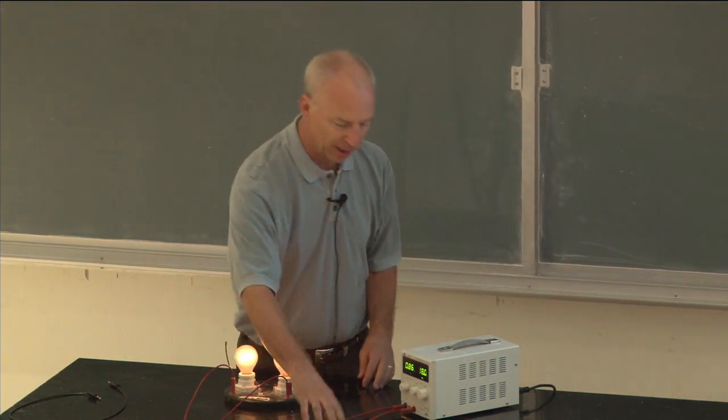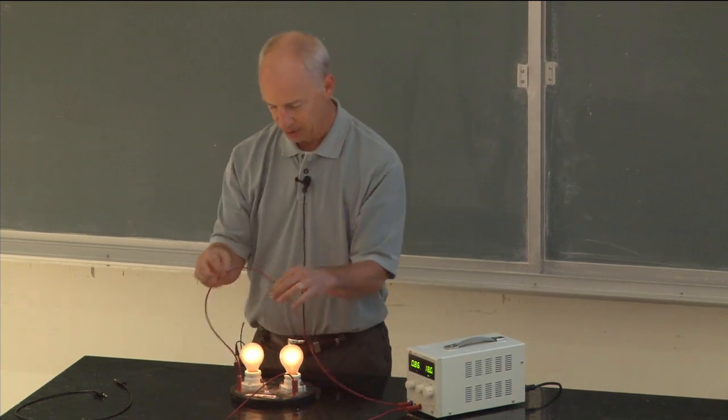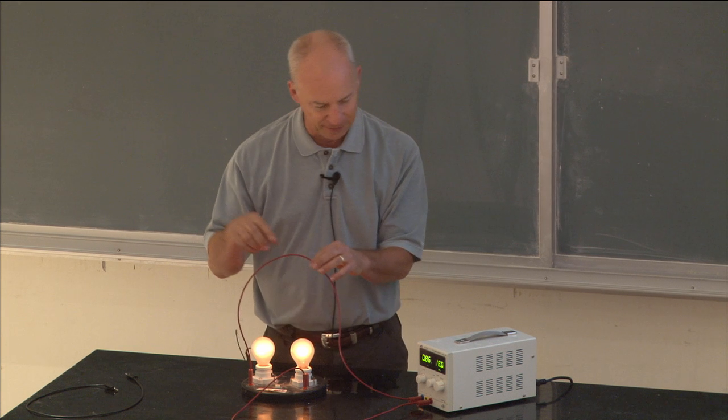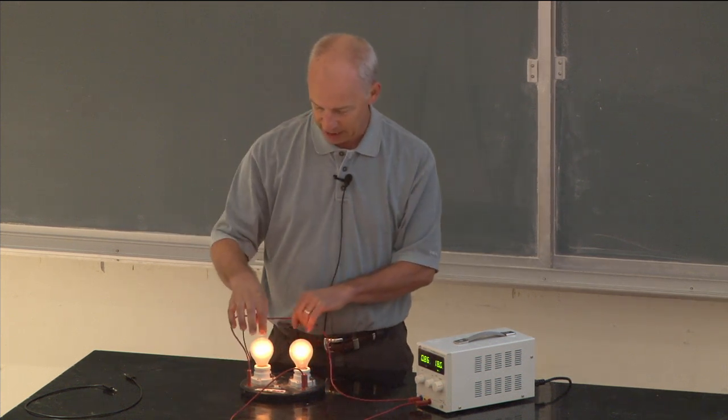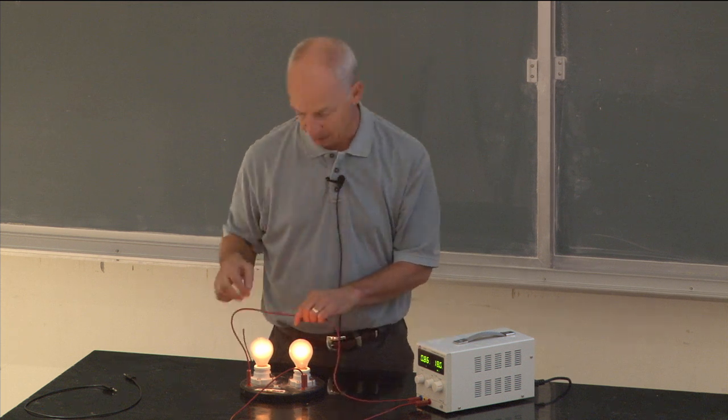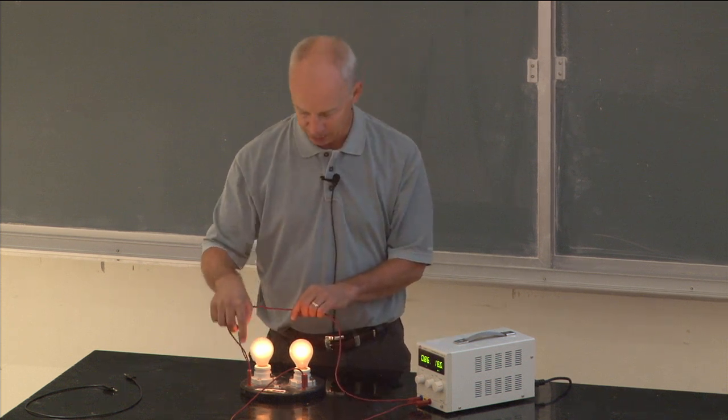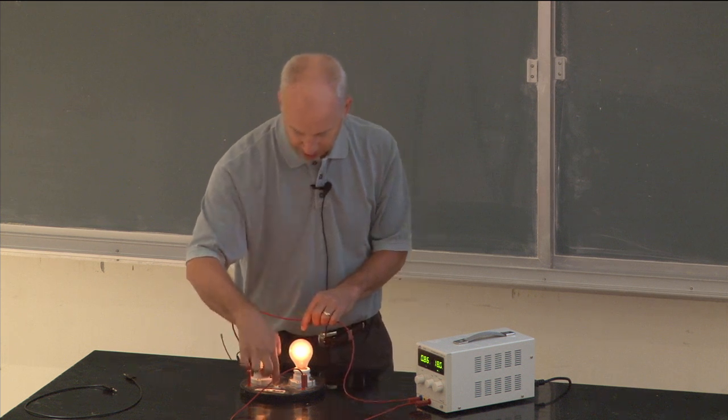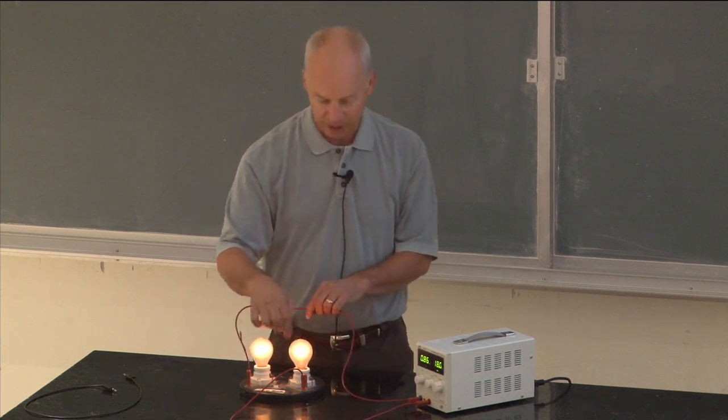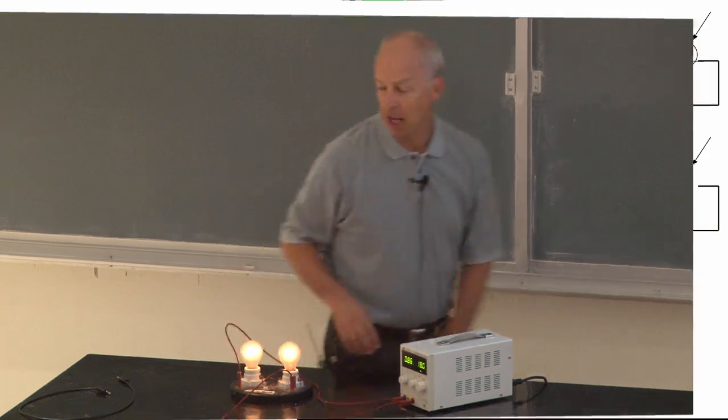What we have hooked up here is, I'll just tell you, you could follow the wires if you wanted to, but I'll just tell you. We have a low voltage side of essentially a battery hooked up to one side of a light bulb, through the light bulb, over to another light bulb over here, and then from the light bulb to the high voltage side.